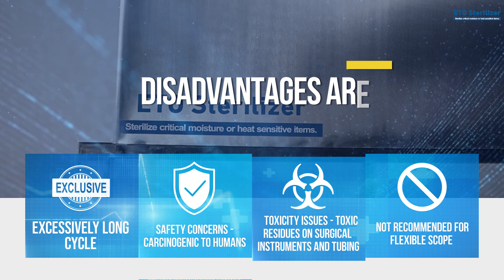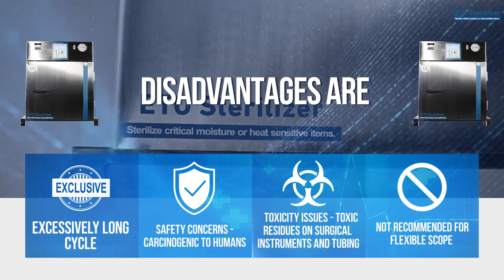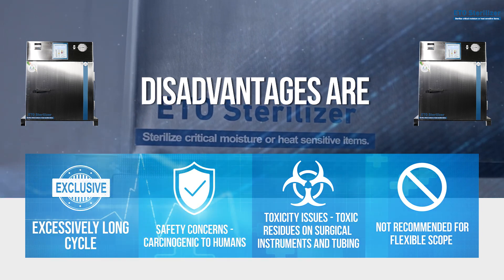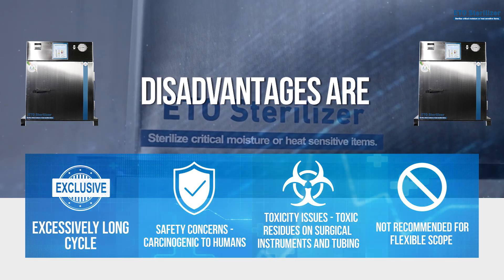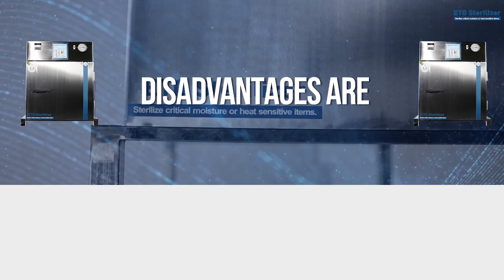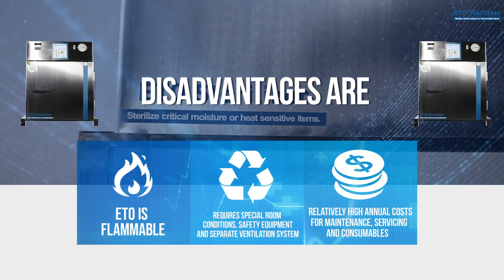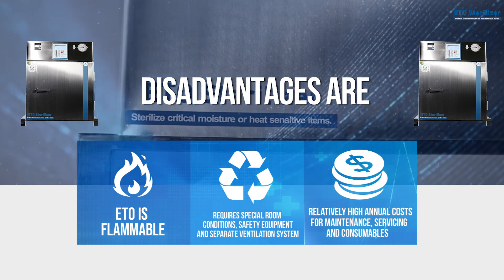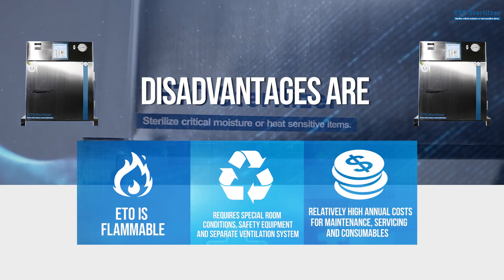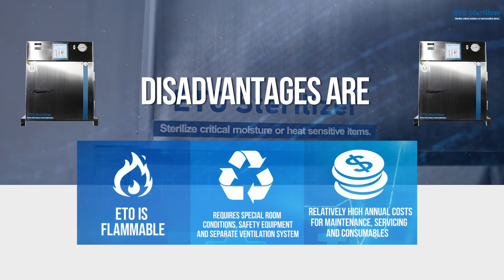Disadvantages are: excessively long cycle, safety concerns, carcinogenic to humans, toxicity issues, toxic residues on surgical instruments and tubing. Not recommended for flexible scope. ETO is flammable. Requires special room conditions, safety equipment and separate ventilation system. Relatively high annual costs for maintenance, servicing and consumables.